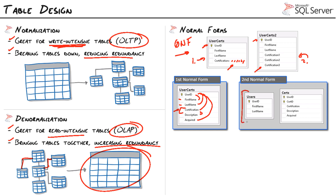Looking at our first normal form table, first name and last name fully depend on the user ID. Certification could depend on the user ID, but description only depends on the certification, and acquired only partially depends on the user — it also partially depends on the certification. To truly reduce redundancy we're going to need a separate certifications table. You'll see second normal form really pop up when you have composite keys. The certifications table still isn't in second normal form because certification and description only rely on the cert ID — so we need to remove user ID and acquired from it.